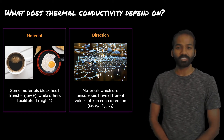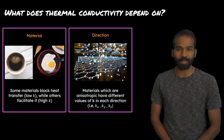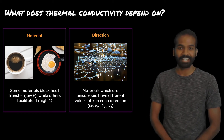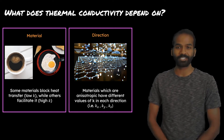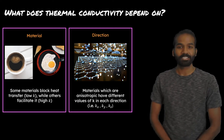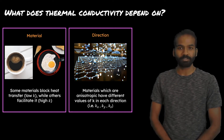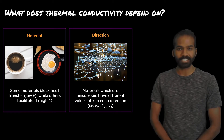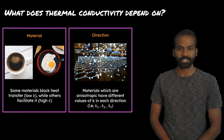This material is clearly anisotropic, meaning that it is different in different directions. And so it stands to reason that there will also be different values of k, the thermal conductivity, in each direction.